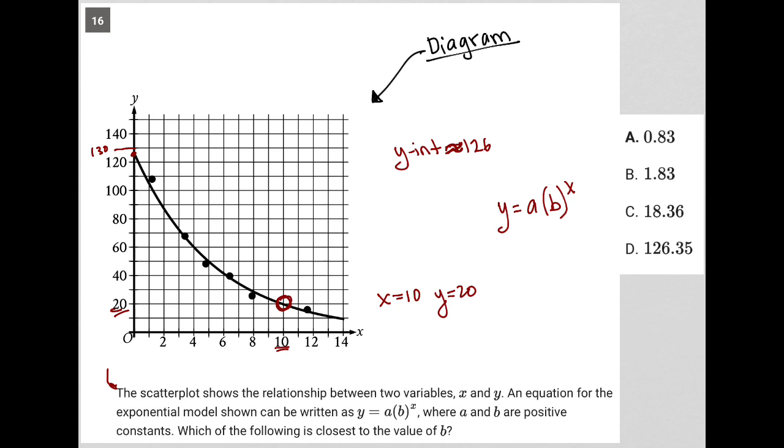Which of the following is closest to the value of b? Well, I'm going to use what I know. All I know really is this information here, which is telling me that the y-intercept is roughly 126. The y-intercept is found where x is equal to 0, so I can actually play around with that information.